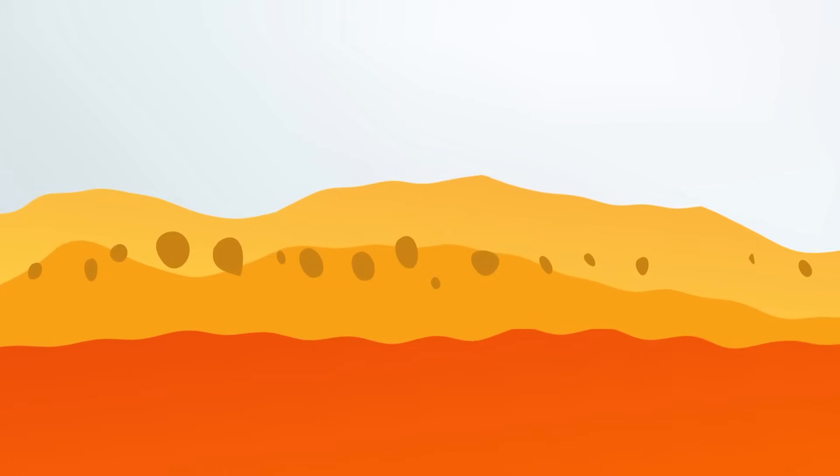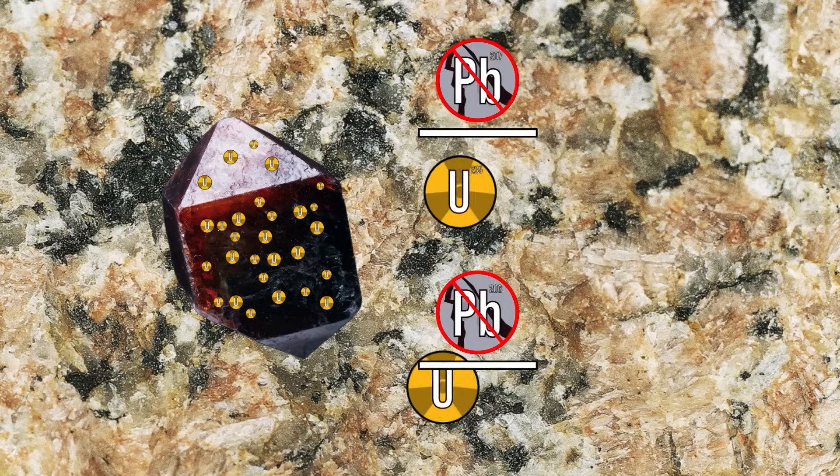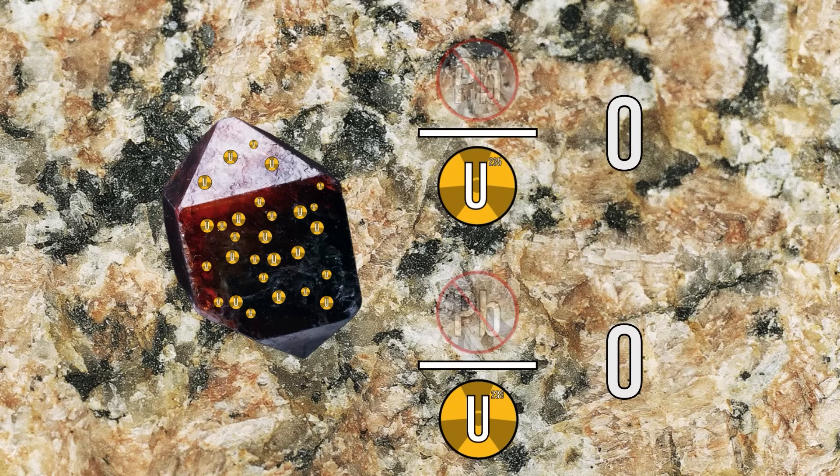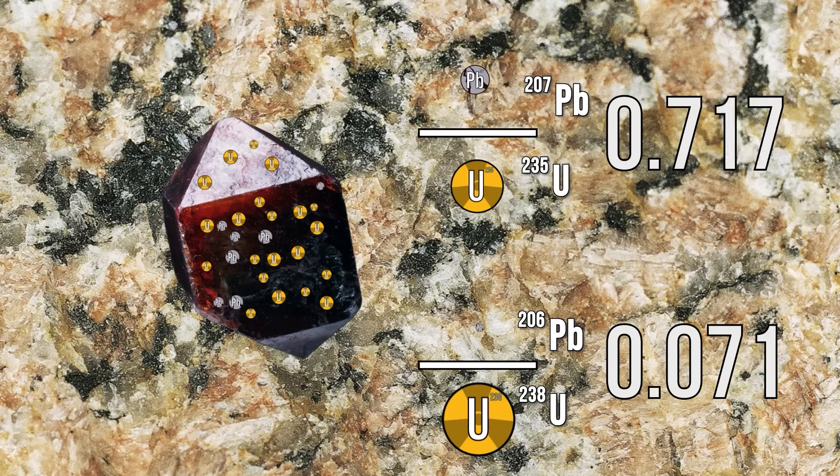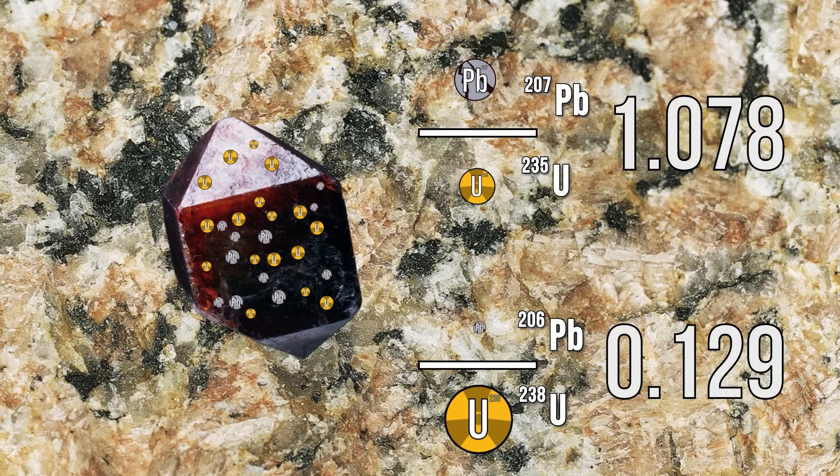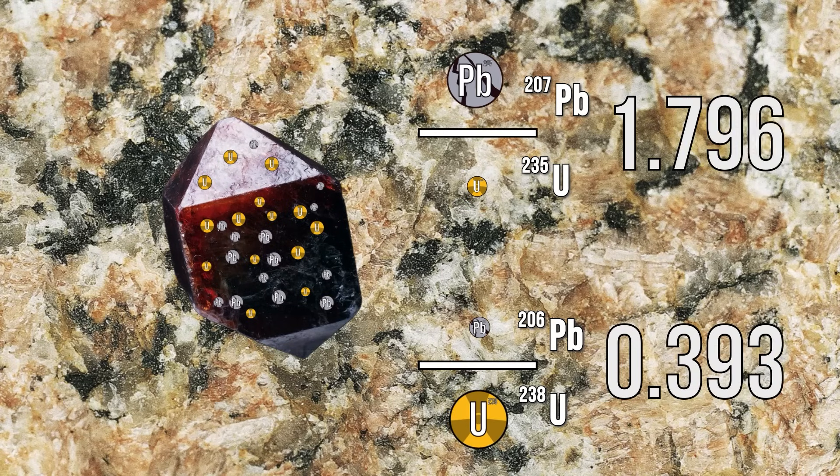When a zircon crystallizes inside of a cooling body of granitic magma, it contains essentially no lead, so the ratio of lead to uranium is zero. As the mineral gets older and uranium decays to lead, each of these ratios increases, with lead-206 over uranium-238 growing more slowly than lead-207 over uranium-235.